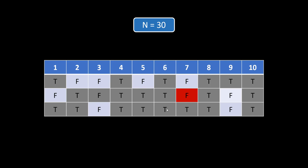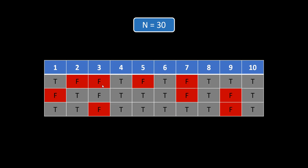Next we move on to 17. Do we have a multiple of 17 in this range? No, because 17 multiplied by 2 gives 34, which goes out of range. So we need not worry about numbers after 5, which is the square root of 30. All numbers that are still false are already prime. We iterate over all numbers and check whichever values are false — those are the prime number indexes. For this example we find there are 9 prime numbers.